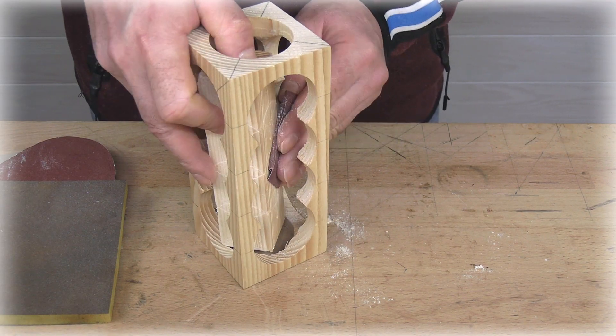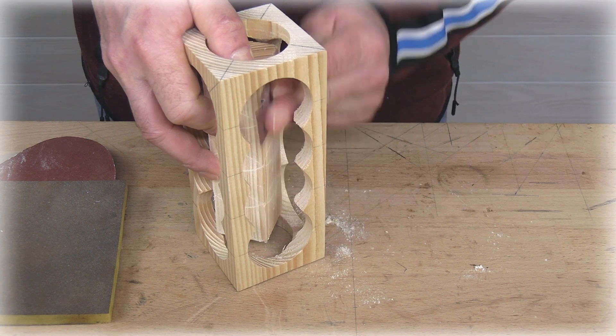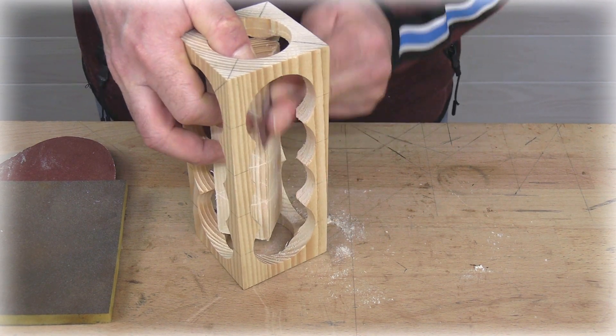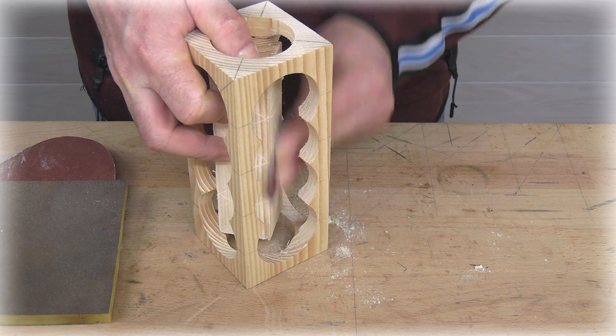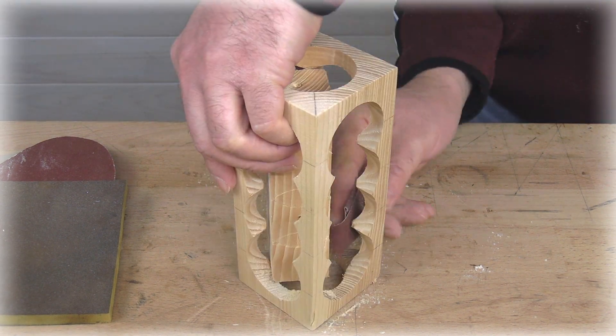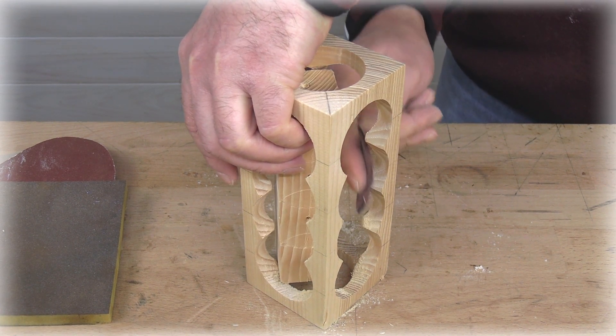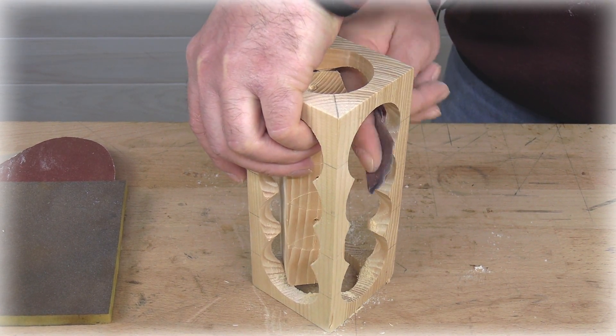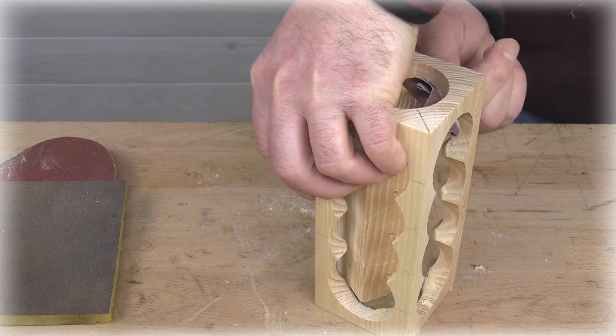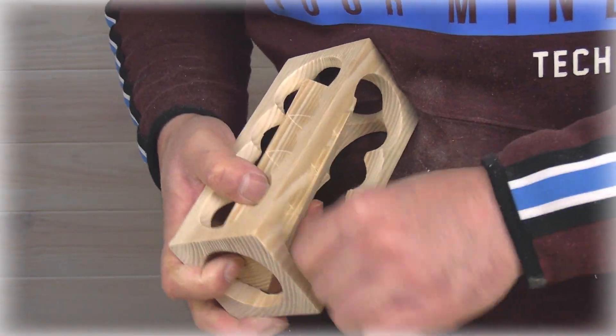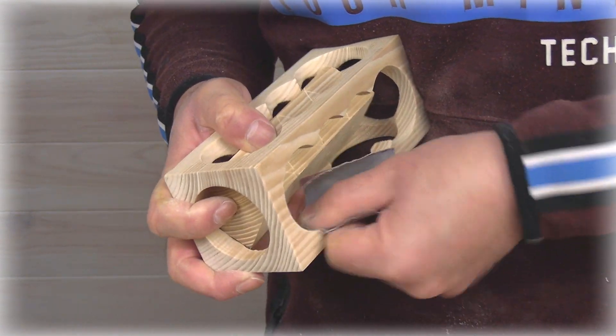When the inner piece is free, it's time to sand everything. With the inner prism at an angle, I sand its faces. I have to be careful not to hit my fingers. I sand all these corners well to remove the knife marks and I try to make them all equal. I sand all the curves and I go over everything with fine sandpaper.